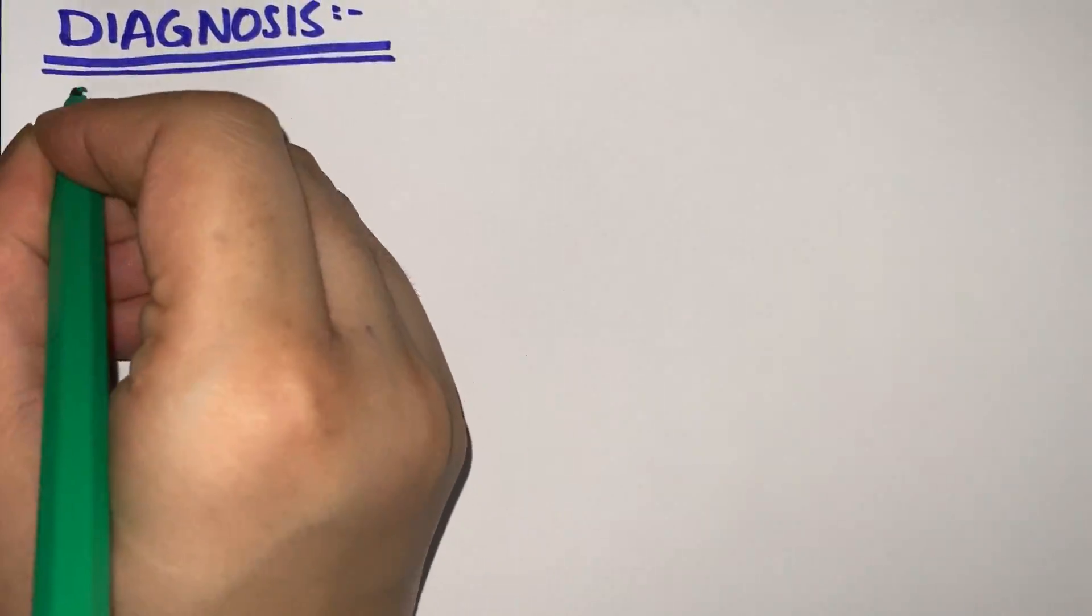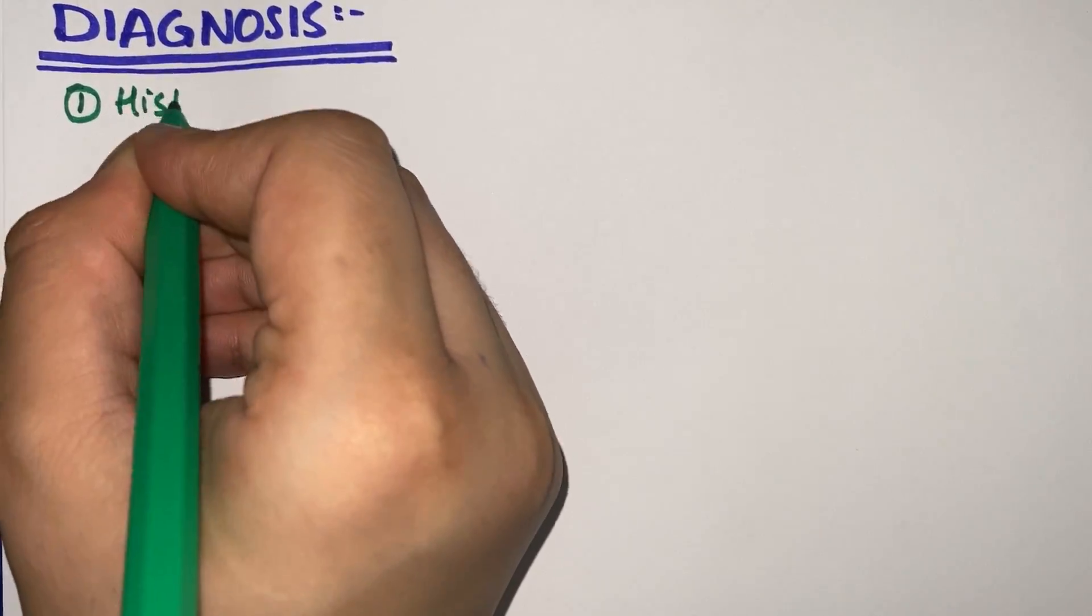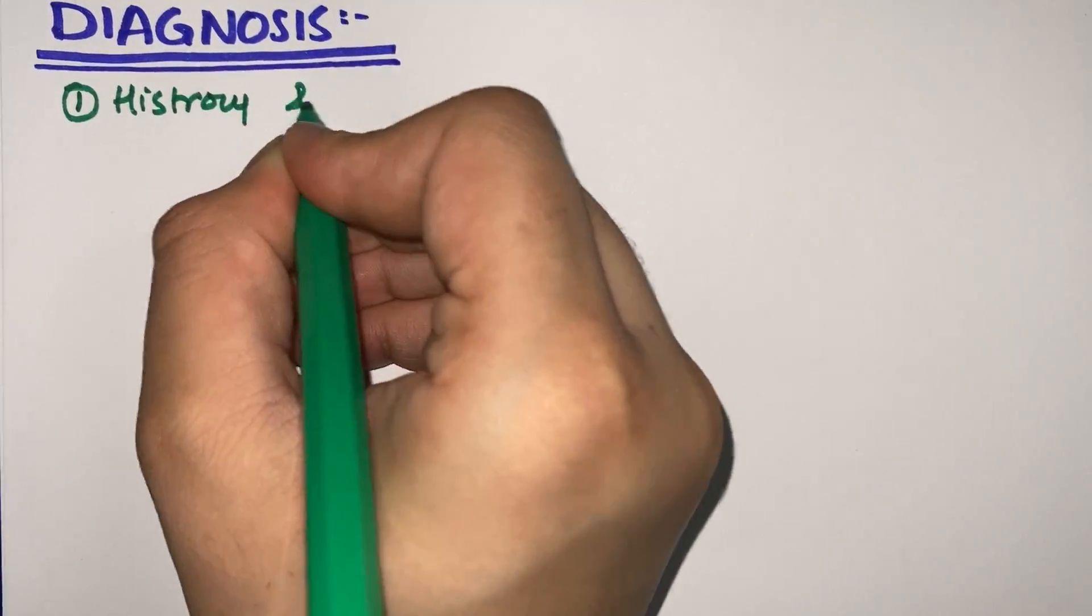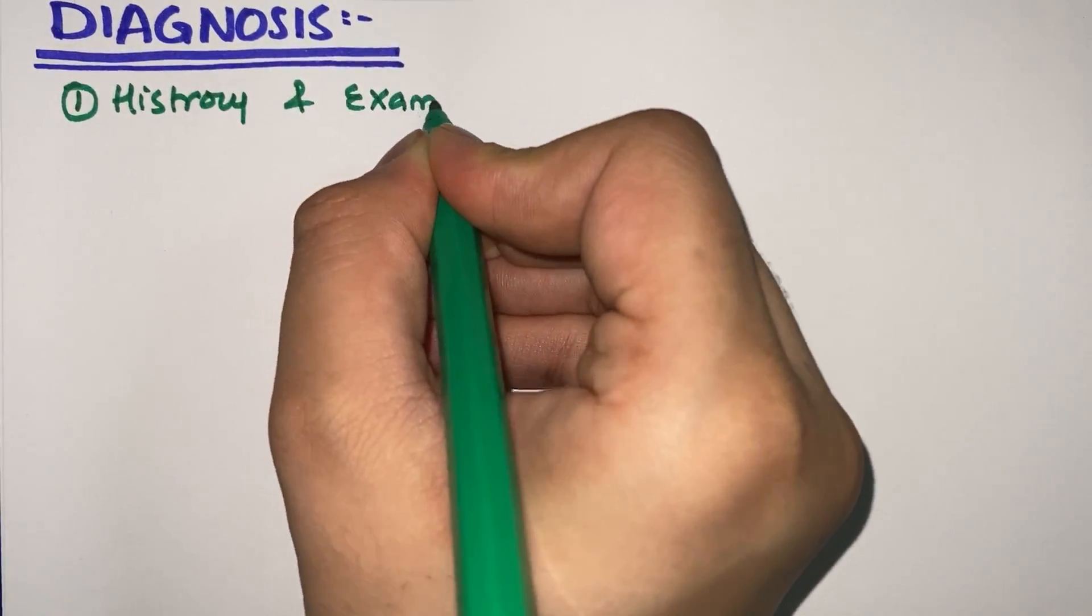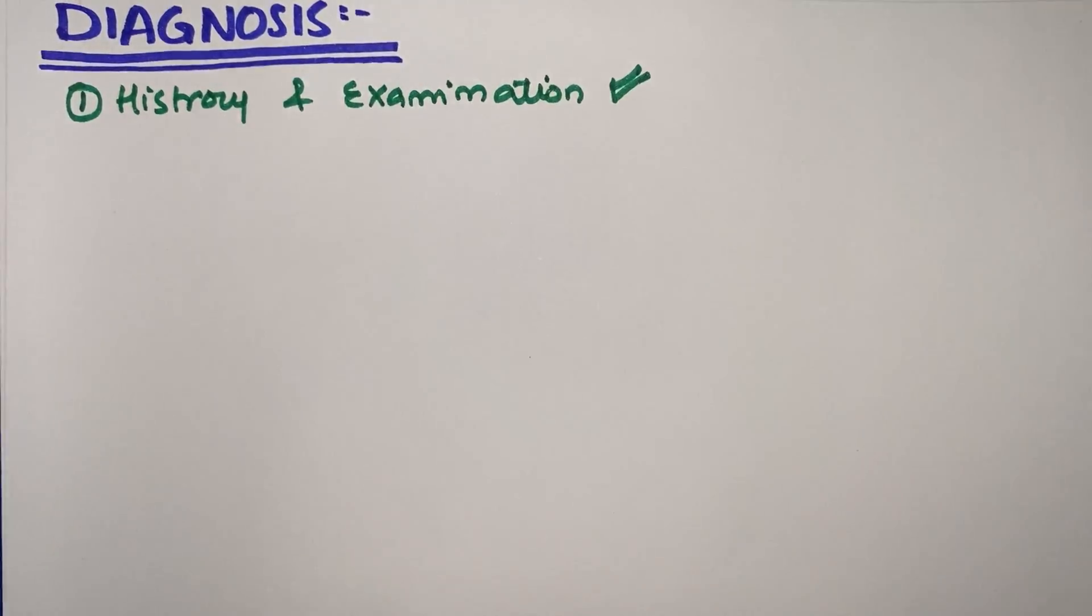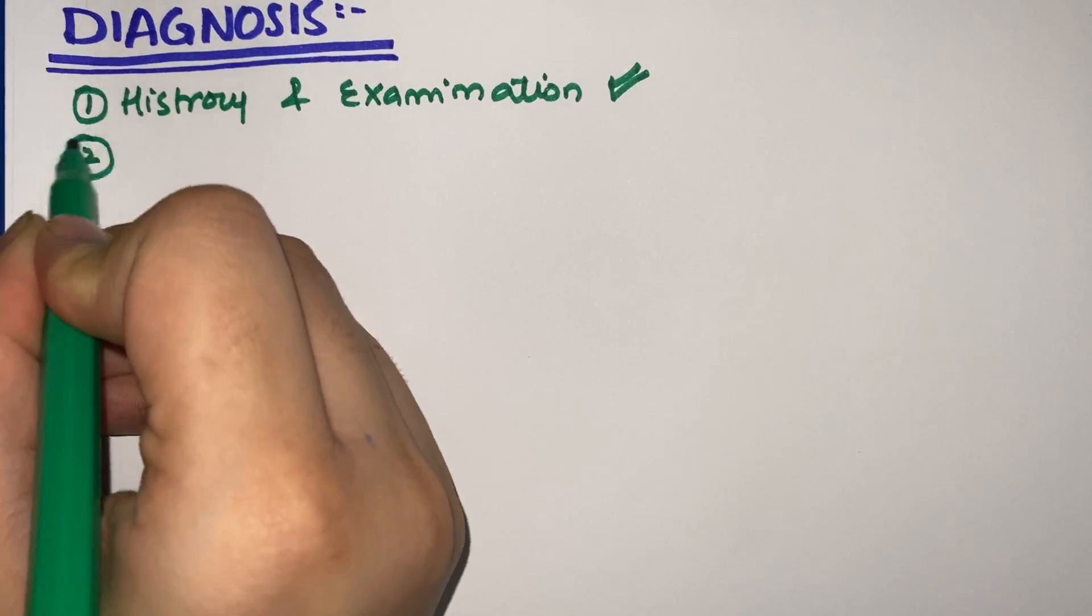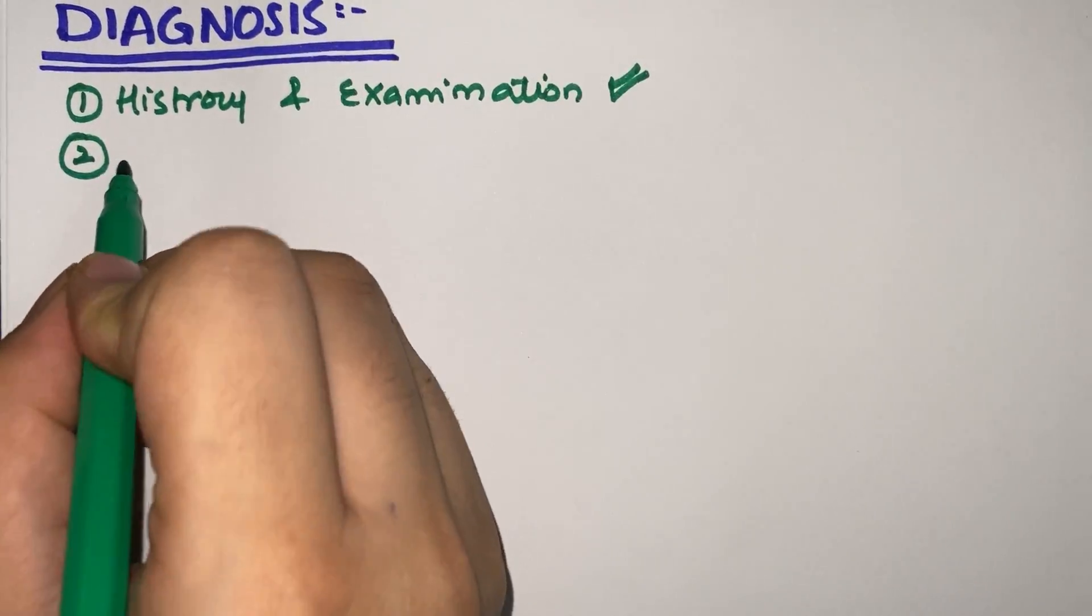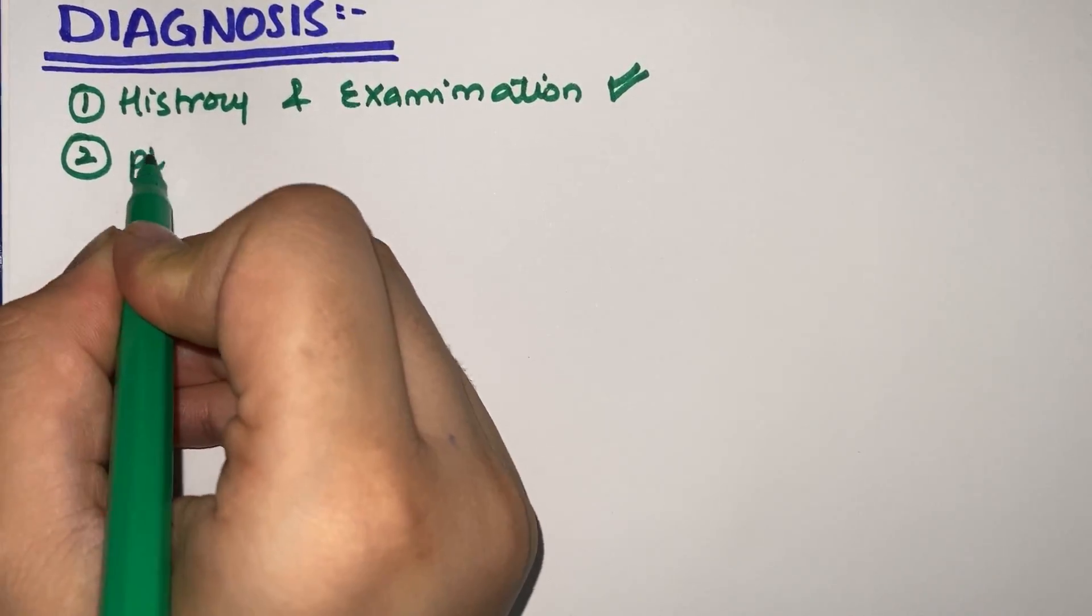Starting with diagnosis: first, as with every disease, we begin with a complete history and examination of the patient. Here we will find most of the features already discussed in the clinical features section. Moving on to particular diagnostic points—a very important point: if a patient comes to you, this will help in clinical practice.